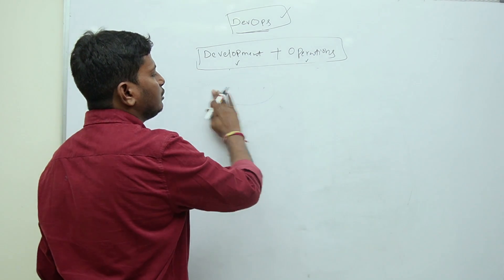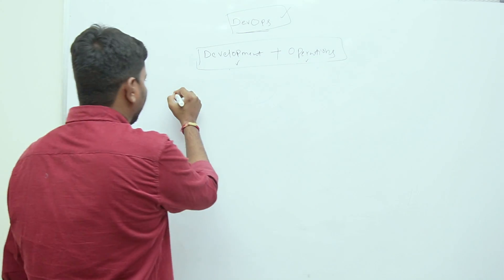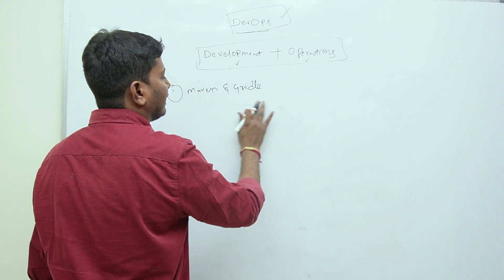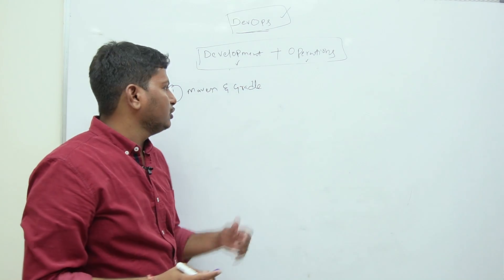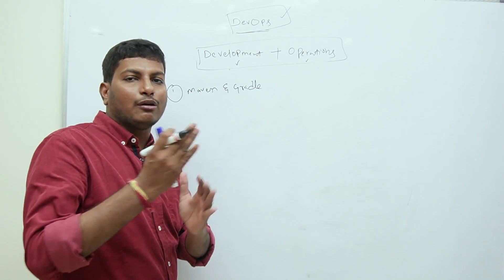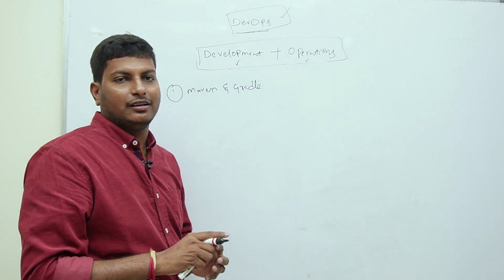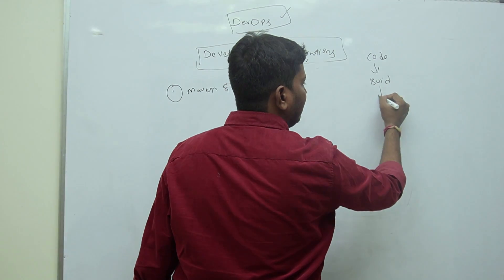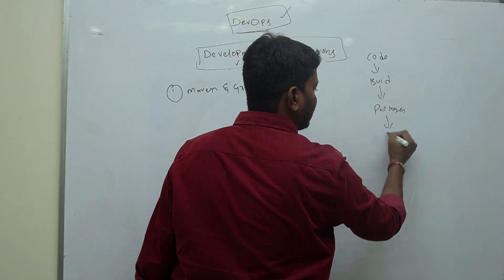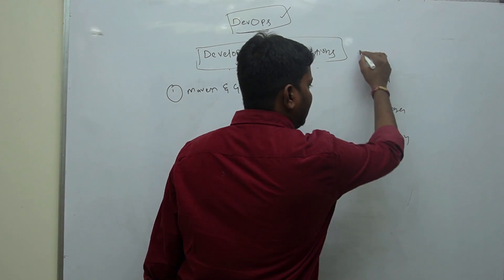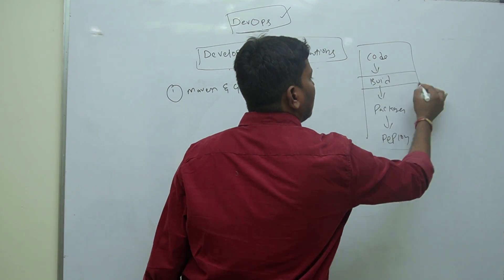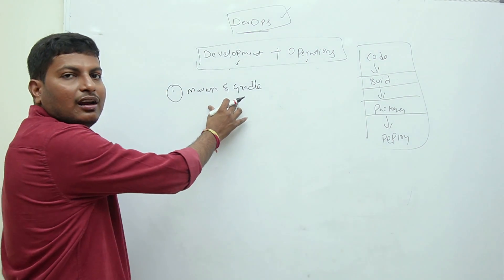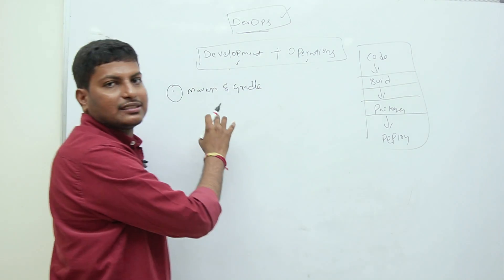Along with Linux, the first tools to learn are Maven and Gradle. Maven and Gradle are called build tools. These tools are used to build the project and convert it into executable format. Coding is done by developers, then that code should be built and packaged. Maven and Gradle perform this build and package operation — they are used to automate the build process of the application.